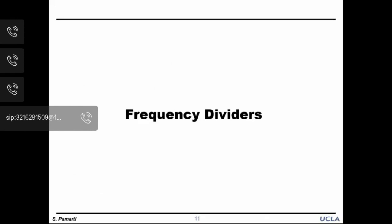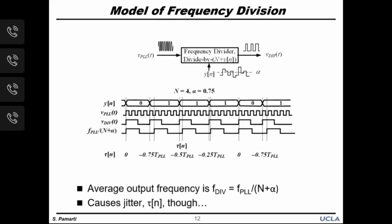The simplest frequency divider is a digital counter working on clock edges of the input. Let us examine what happens when we dynamically change the division ratio. Here is an example where N is equal to 4 and y[n] is a repeating sequence of 0 followed by three 1s: 0, 1, 1, 1, 0, 1, 1, 1, and so on. The sequence clearly has an average of 0.75, so the divider output has an average frequency of f-PLL divided by 4.75.